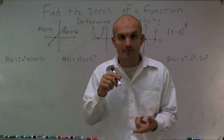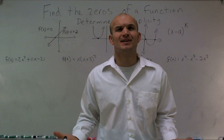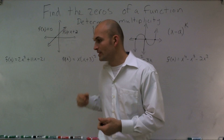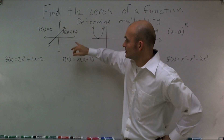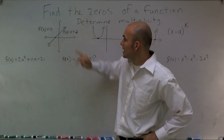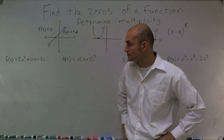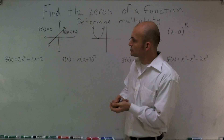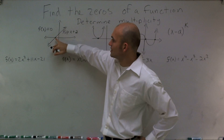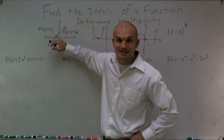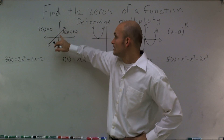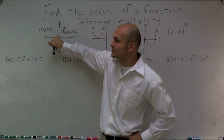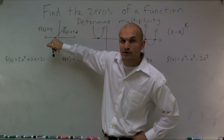Before we get started, we need to remember what exactly are the zeros of a function. I constructed a linear function f of x equals x plus 2. For that function, you can see that it crosses the x-axis at 0. So f of x is equal to 0 at this point.